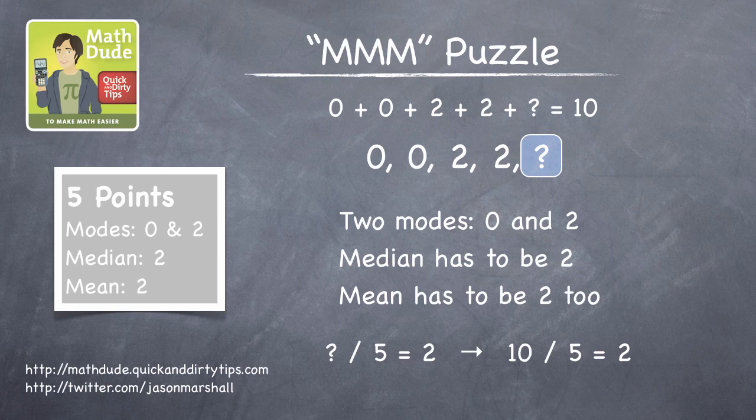Right now, the total is 4. It's 0 plus 0 plus 2 plus 2. So the final number must be 10 minus 4 equals 6.